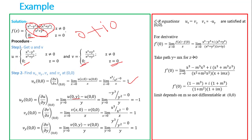So u(0, y) = −y³/y² = −y. Then [u(0,y) − u(0,0)] / y = [−y − 0] / y = −1. So uy(0,0) = −1. For vx at (0,0): v(x, 0) = x³/x² = x, so [v(x,0) − 0] / x = 1, giving vx(0,0) = 1. For vy at (0,0): v(0, y) = y³/y², so the limit as y tends to 0 of y³/y³ = 1, giving vy(0,0) = 1.